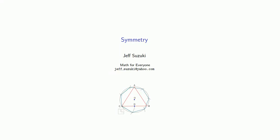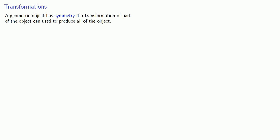Another important feature of geometric objects is known as symmetry. We say a geometric object has symmetry if a transformation of part of the object can be used to produce all of the object. The type of symmetry is determined by the type of transformation.